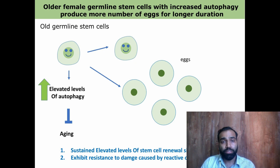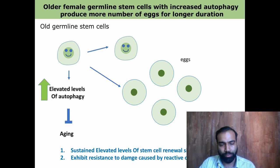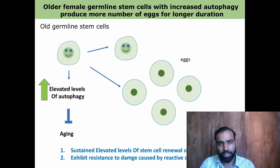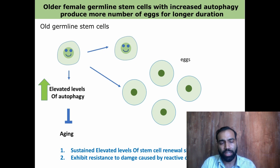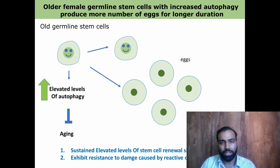We next looked at the self-renewal markers in these cells and found that these were also elevated, thus enabling these stem cells to be maintained for a longer time in adult tissues. An important aspect of aging is the mitigation or adaptability towards reactive oxygen species. Reactive oxygen species cause damage to cells and are one of the reasons why cells age. However, in our study, when autophagy levels were elevated, ROS levels were mitigated, suggesting that autophagy is also functioning by reducing the damage caused by reactive oxygen species.